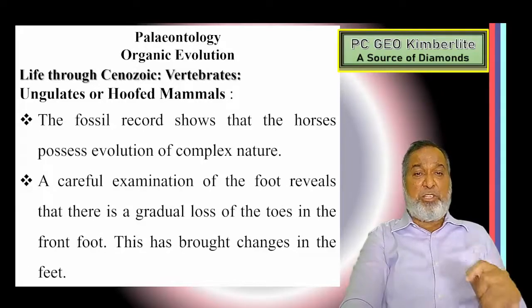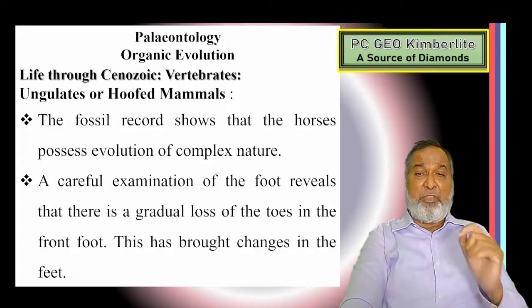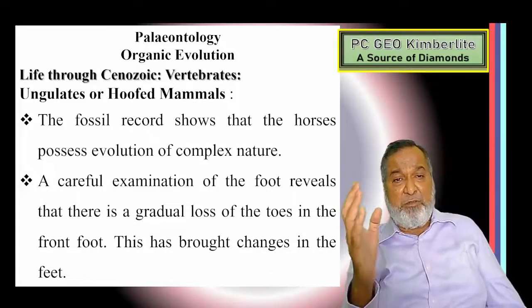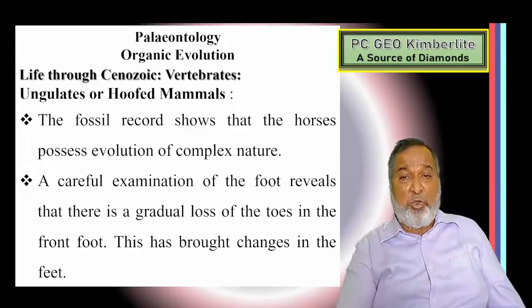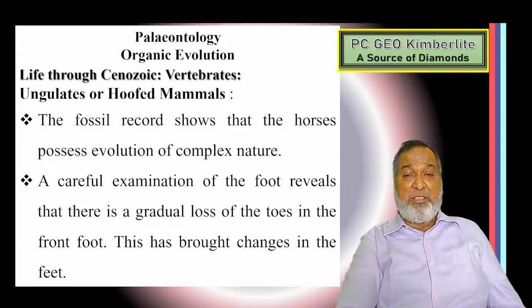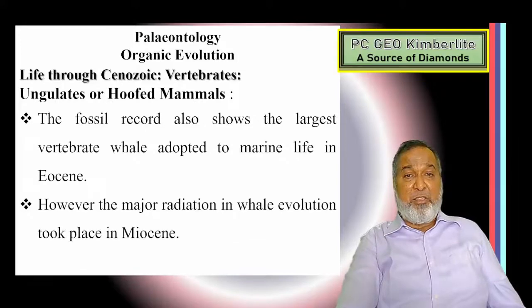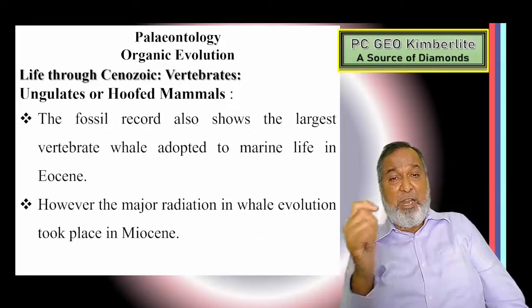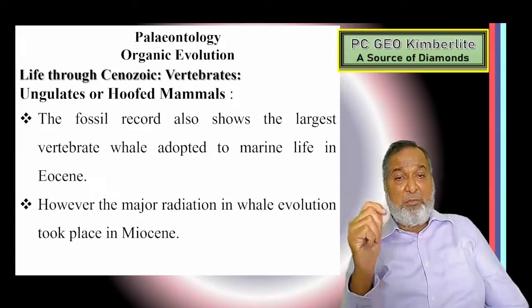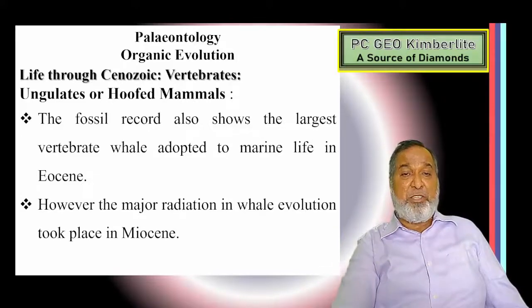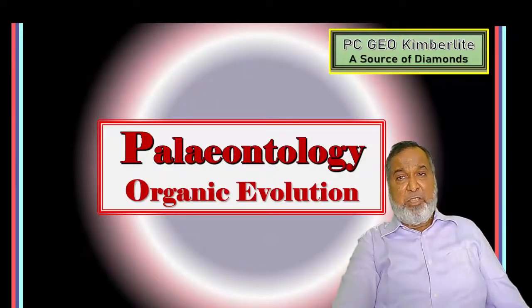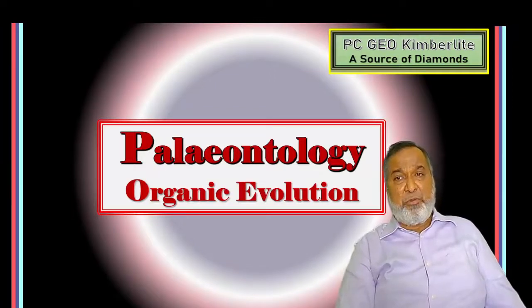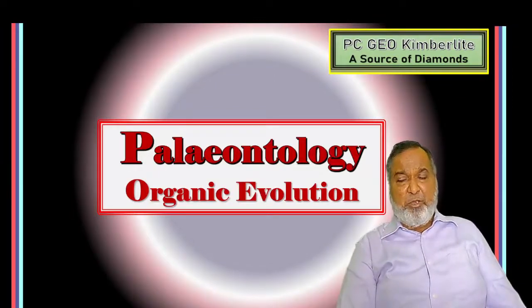The fossil record shows that horses possessed a complex evolution. Careful examination of the foot reveals a gradual loss of toes in the front foot, showing broad changes in the feet. The fossil record also shows the largest vertebrates — whales — well adapted to marine life in the Eocene. The major radiation in whale evolution took place in the Miocene. With this we have covered organic evolution and life through the Precambrian, Paleozoic, Mesozoic, and Cenozoic. Thank you and have a nice day.